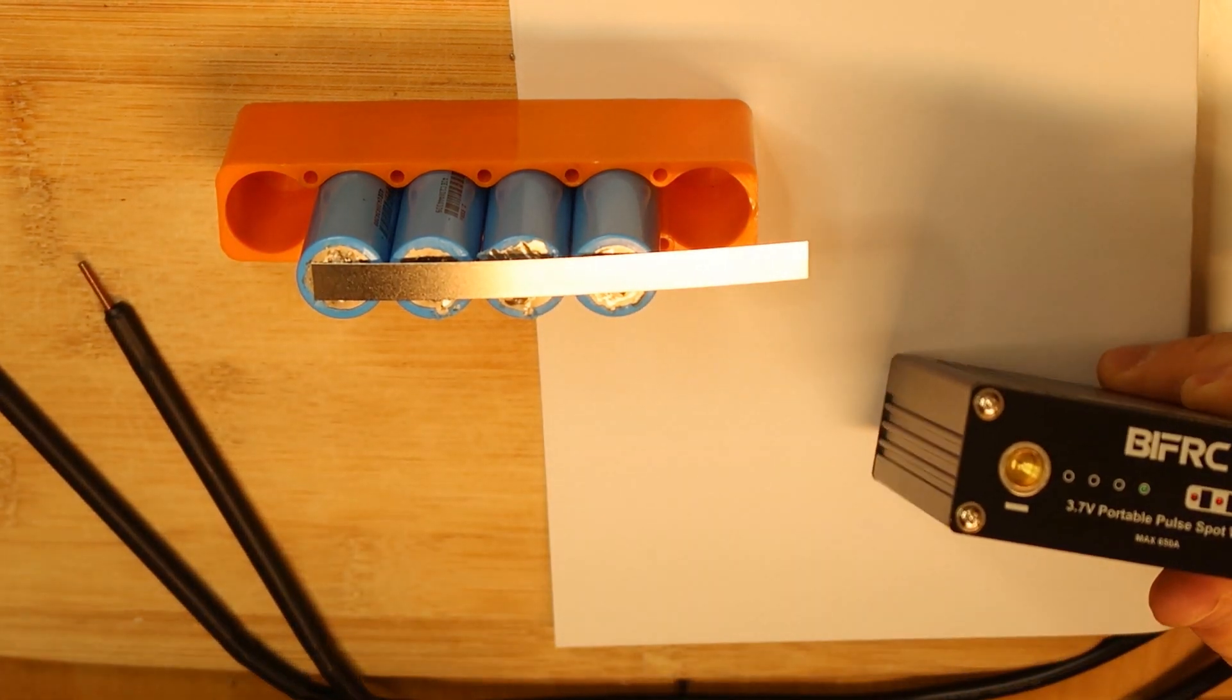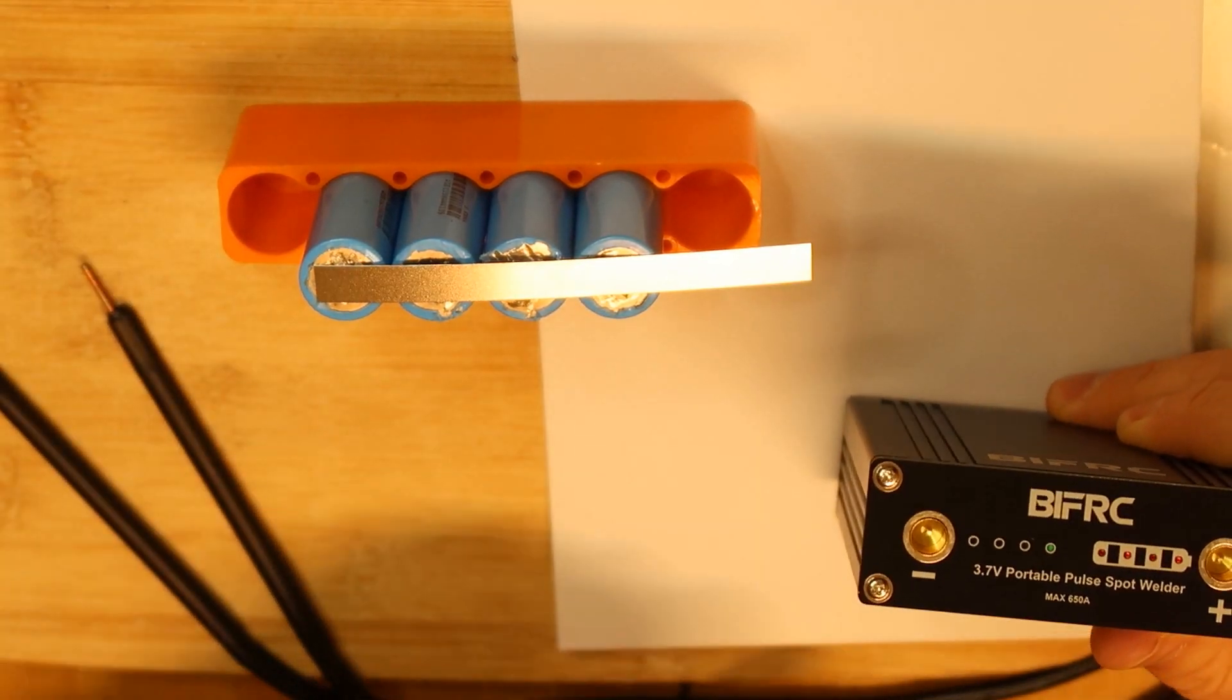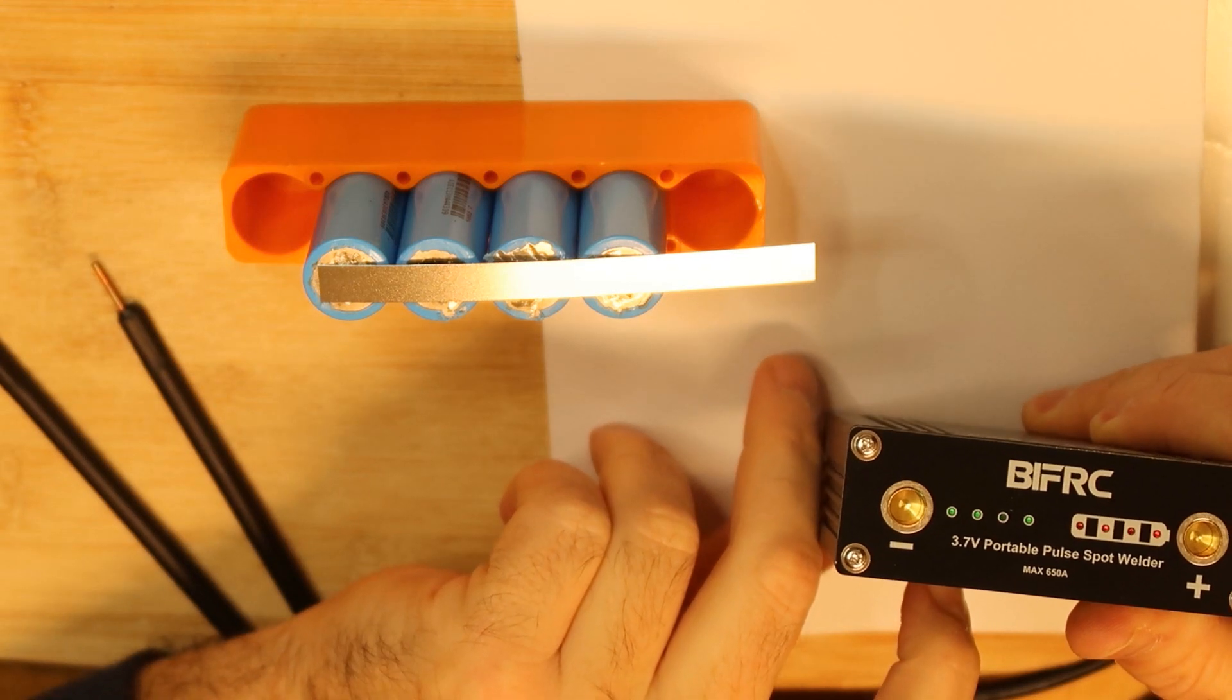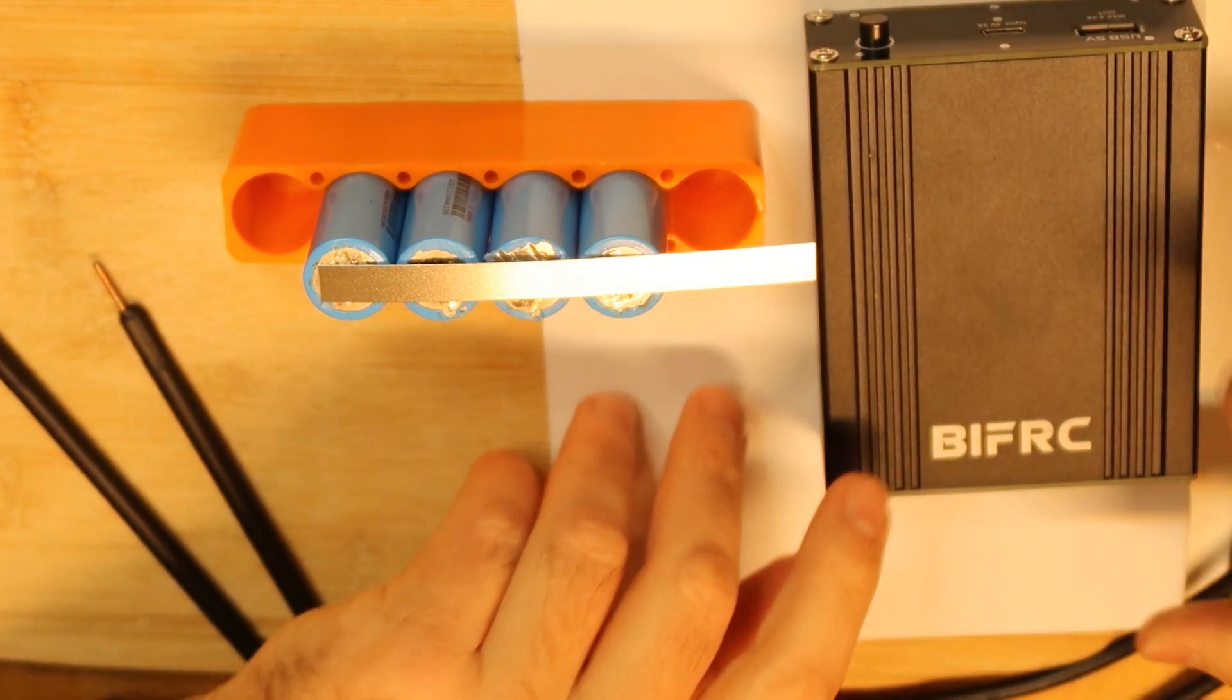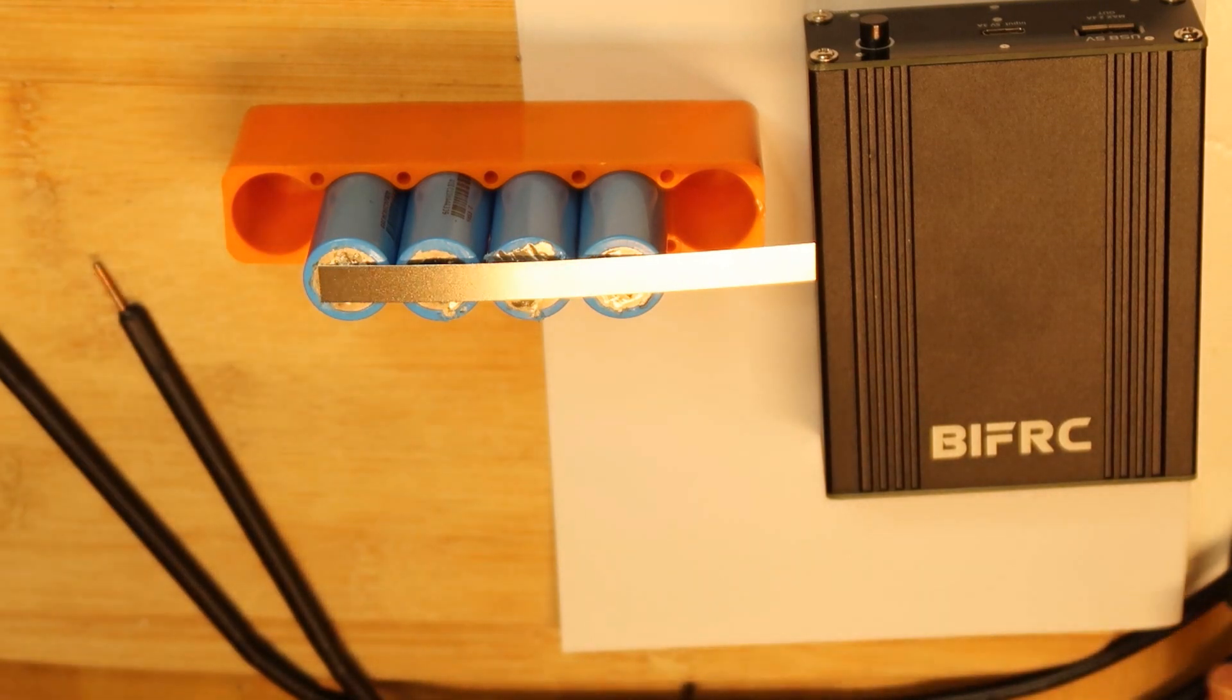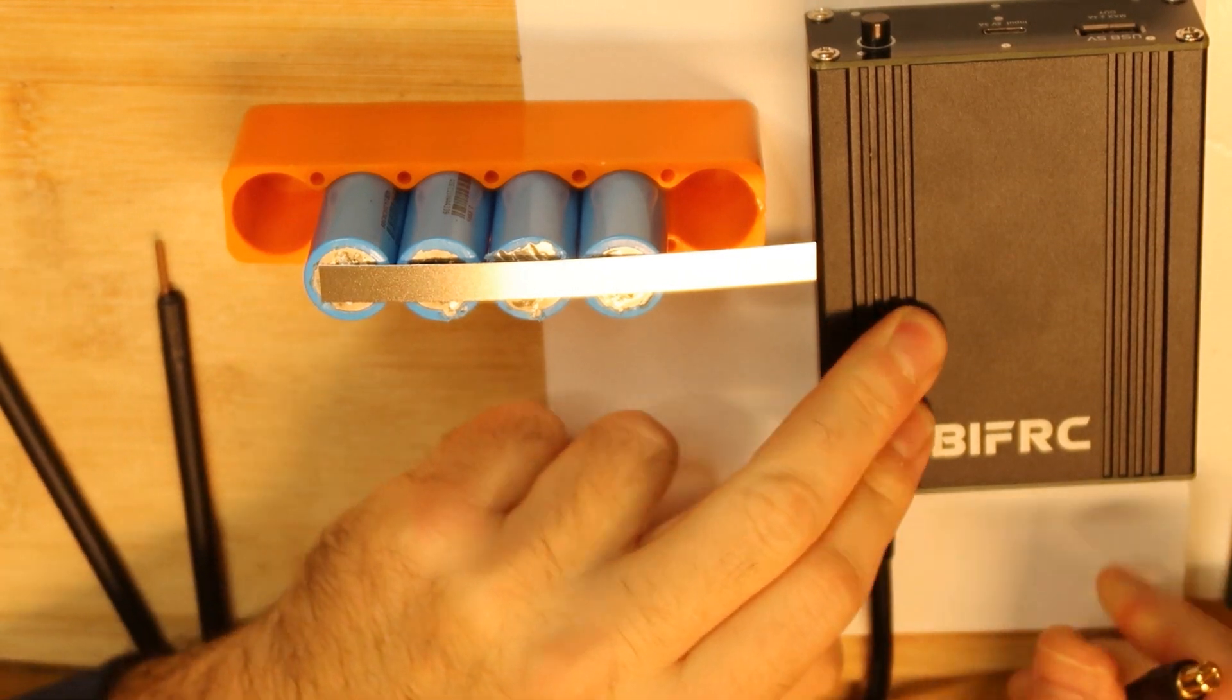So let's go to the highest power, right? This is the maximum power out. Now we will start to weld, and each 10 pulses we will mark one point on the paper.